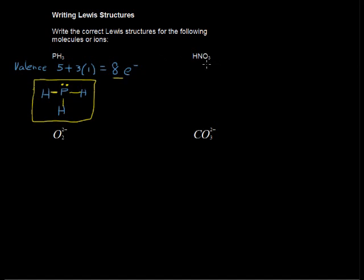Moving along. HNO₃, nitric acid. On this one, we're going to count the valence electrons again. For hydrogen, we have one. For nitrogen, we have five valence electrons, and we have three oxygen atoms times six valence electrons for each oxygen atom. So six plus 18 gives a total of 24 valence electrons.